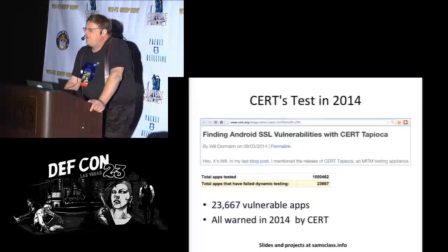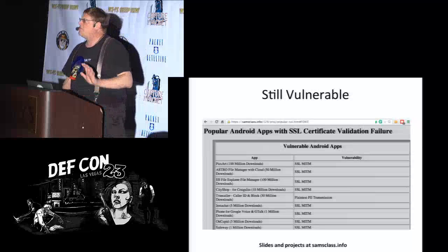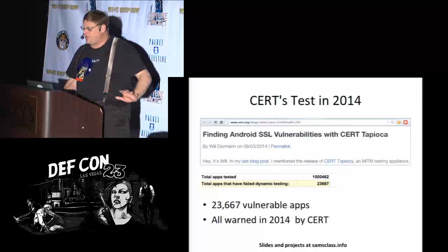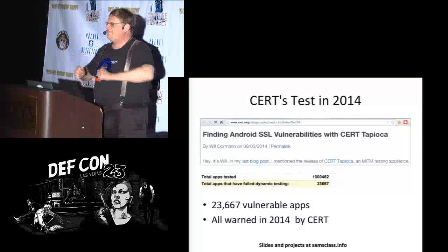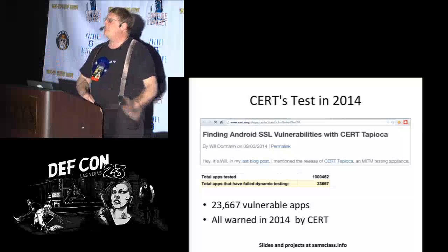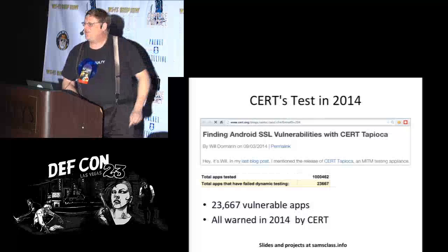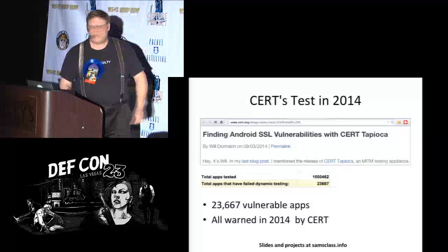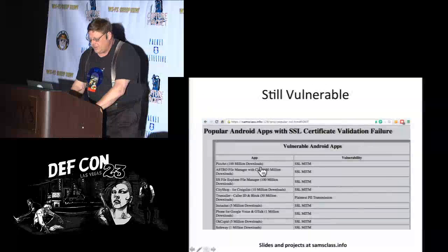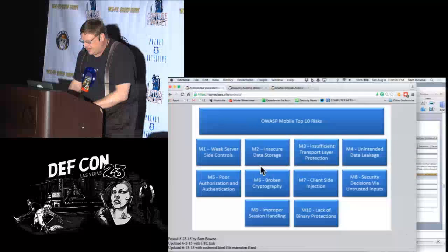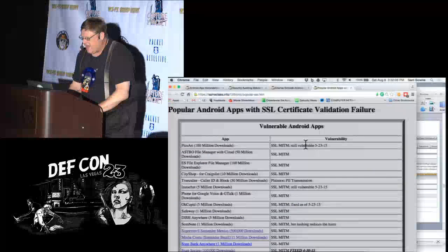On broken SSL: Carnegie Mellon found 23,000 vulnerable apps. I went to look to see how many of those apps were still vulnerable seven months later, since they'd already been notified. A lot of them were — like Pixar with 100 million downloads was still vulnerable.